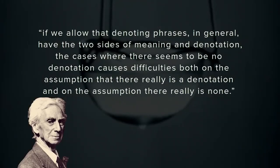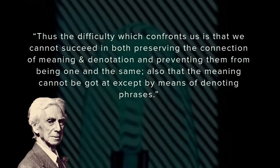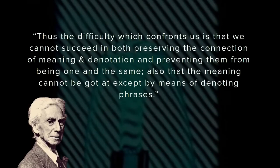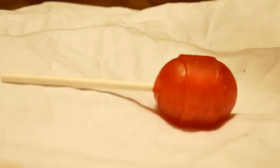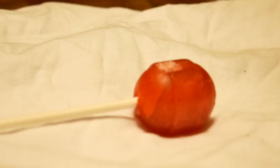Bertrand Russell said of Frege's views: 'If we allow that denoting phrases in general have the two sides of meaning and denotation, the cases where there seems to be no denotation causes difficulties, both on the assumption that there really is a denotation and on the assumption there really is none. Thus, the difficulty which confronts us is that we cannot succeed in both preserving the connection of meaning and denotation, and preventing them from being one and the same, also that the meaning cannot be got at except by means of denoting phrases.' Russell's critique is that Frege's notion of sense is simply superfluous. His distinction between names and definite descriptions brings about a problem: if names are supposed to grant immediate acquaintance with an object, does this mean they are an accurate representation of the thing itself, or just another wrapping like definite descriptions?